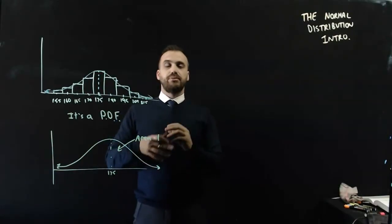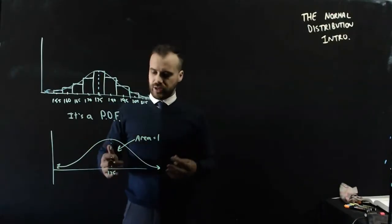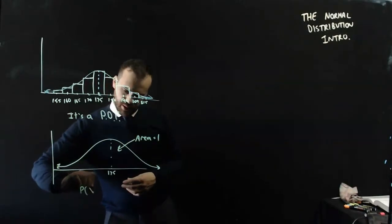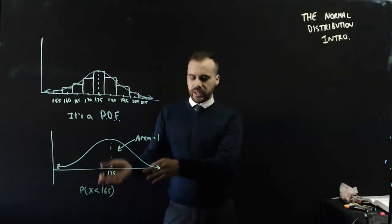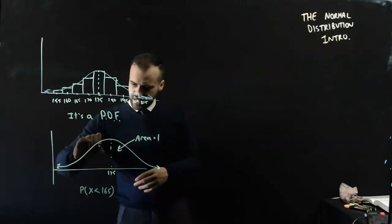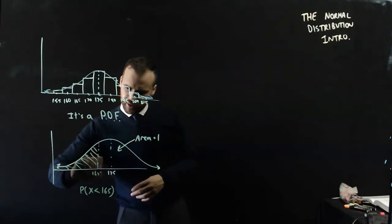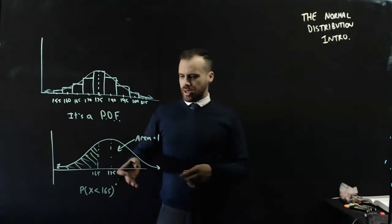Now, if you want to know the probability of someone being a particular height, it's relatively straightforward. If you want to know what's the probability of someone being less than 165cm tall, well, that's going to be really easy. You just need to find that area, and you'll know the probability of them being less than 165cm tall.